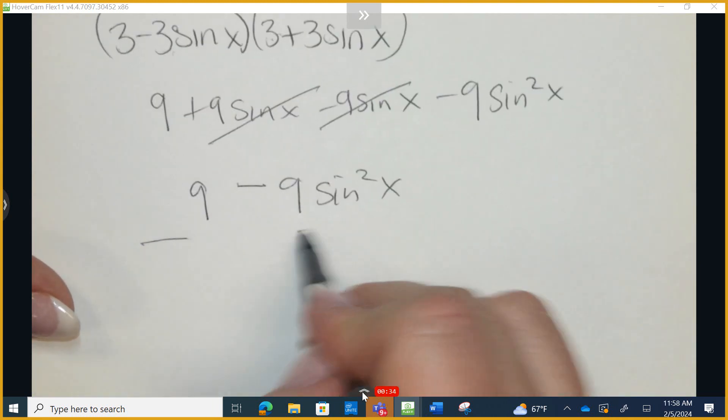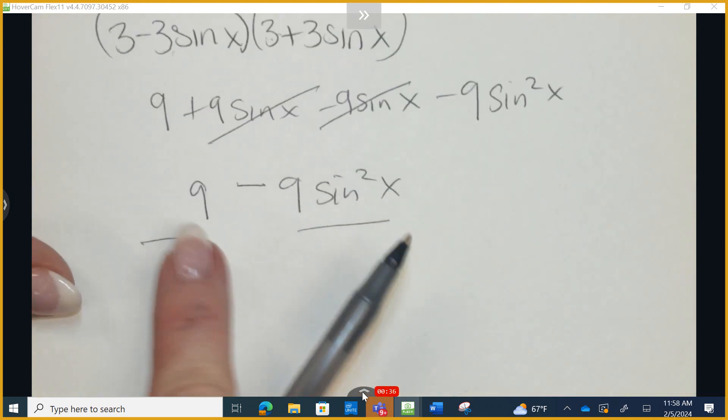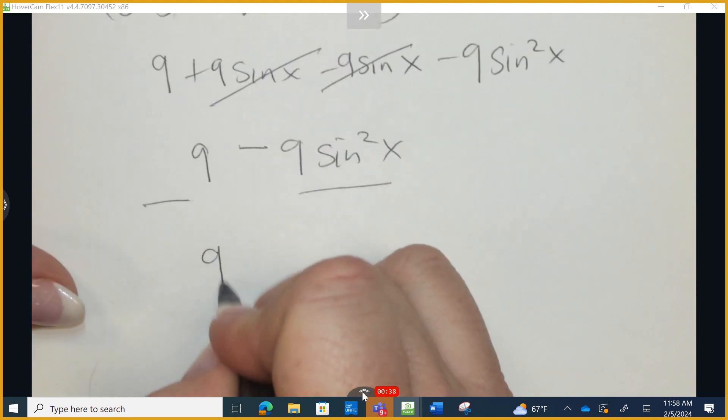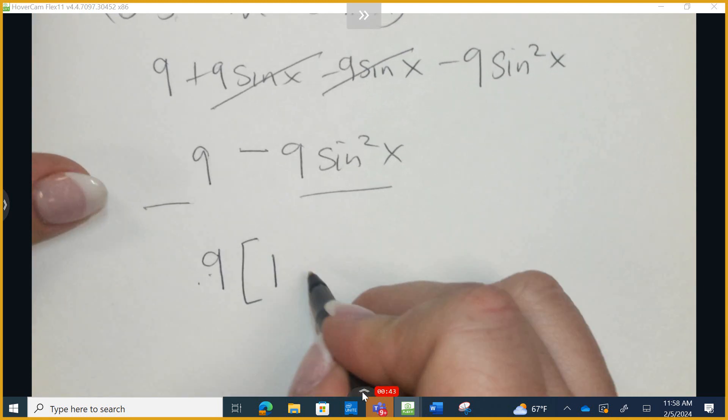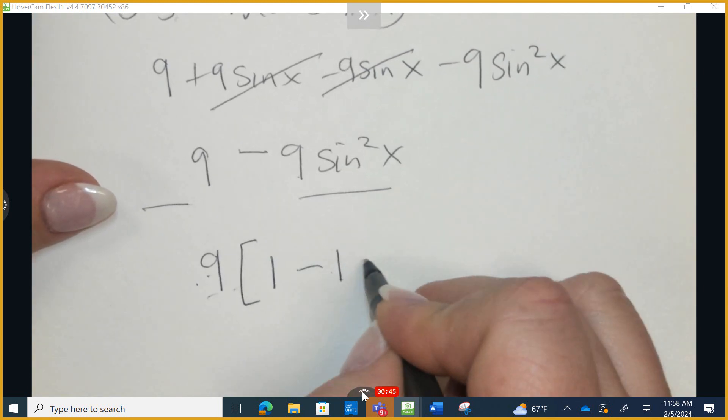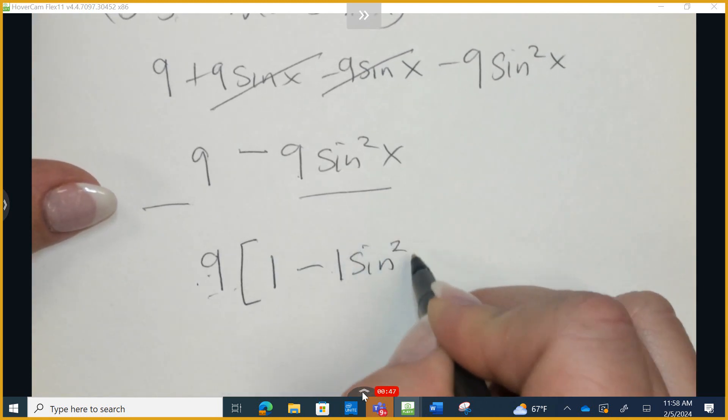So out of these two terms separated by a subtraction sign, notice they both contain a 9. So let's factor out the 9. 9 times 1 is 9. 9 times negative 1 is negative 9. And we have a sine squared.